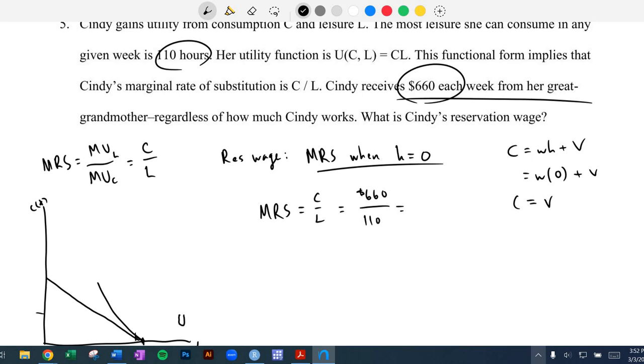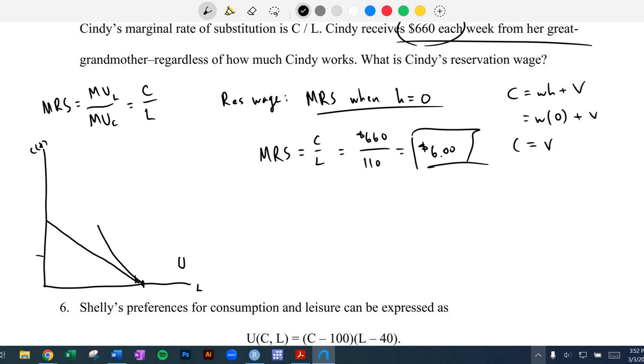And so we have 660 divided by 110. That means that reservation wage is going to be $6, right? And that's that slope here. Okay, if it goes up to, you know, $6 and a penny or say $7, right? That'll be just enough to get Cindy to work their first hour.